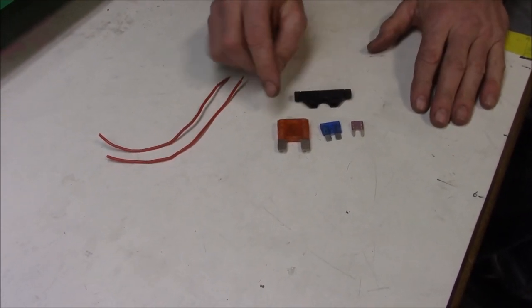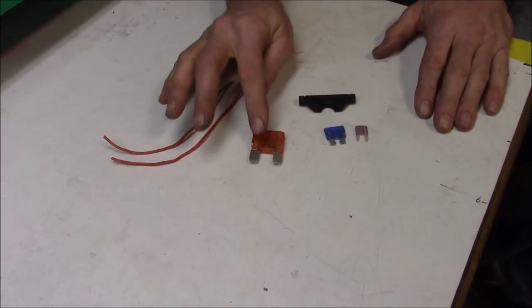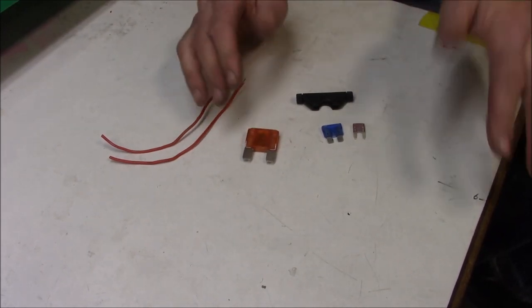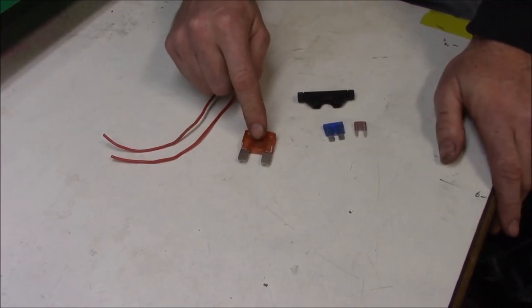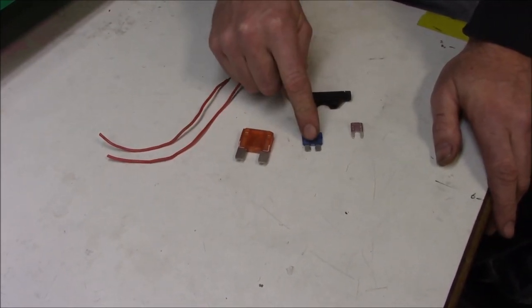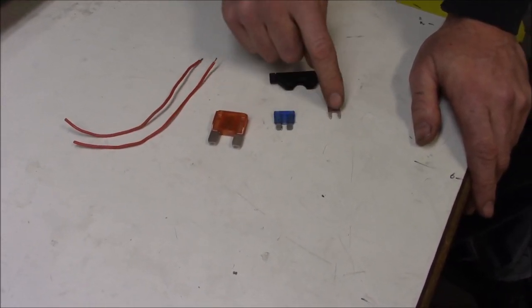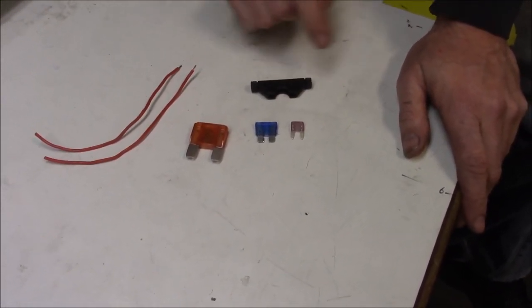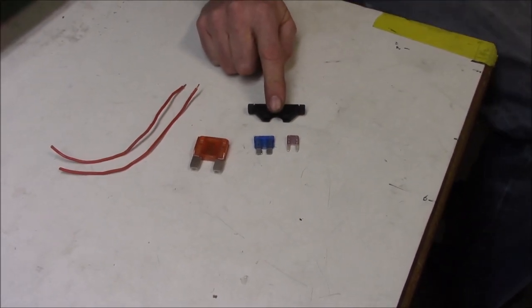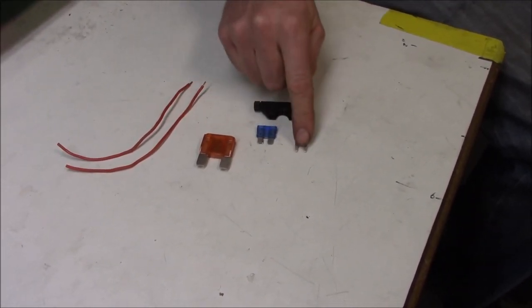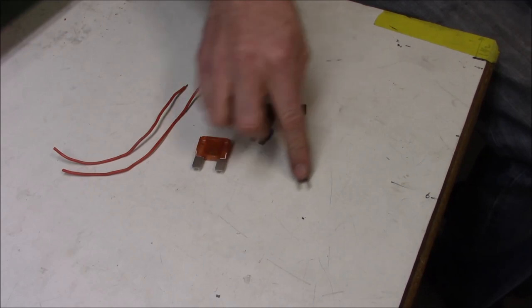This is a maxi fuse, which really isn't used on motorcycles, but I'm just giving you a comparison. That's more a car type thing. This is a normal type motorcycle fuse, normal size, and this is called a mini fuse. So the holder we have today is for the normal size fuse. I just wanted to show you the comparison on some of those.